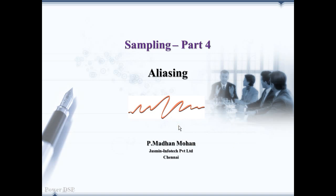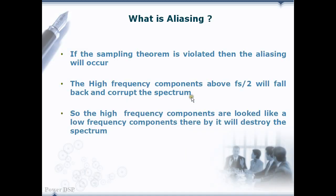If we violate the sampling theorem, aliasing will occur. We will see in this session what is the effect of aliasing and how to avoid it. If we violate the sampling theorem, aliasing will occur which will destroy our spectrum of interest. The high frequency components above Fs/2 will fall back and corrupt the spectrum. The high frequency components are looked like low frequency components, so we will lose our information and end up with the wrong information.